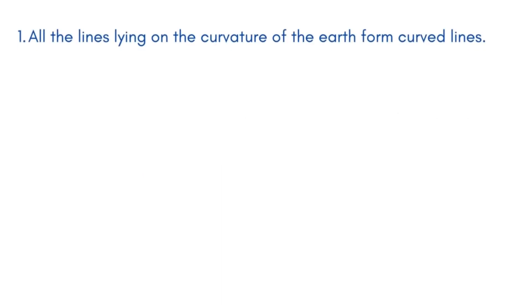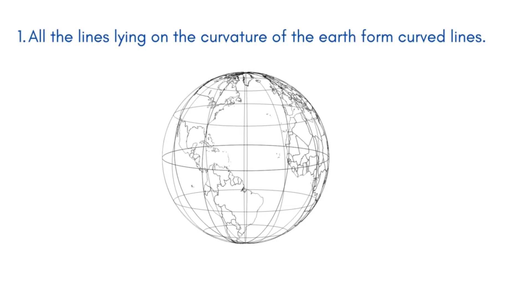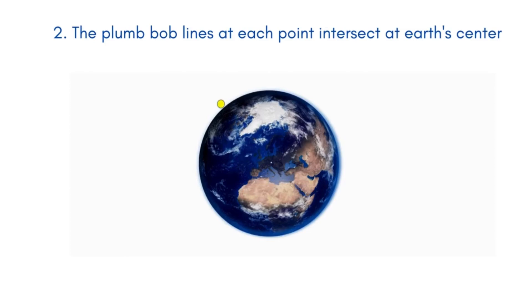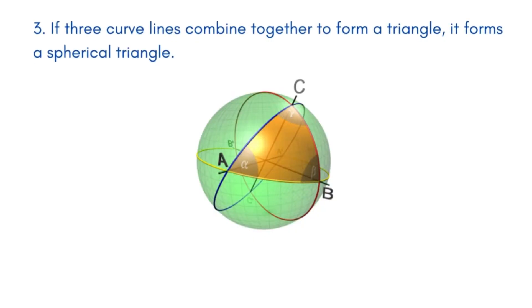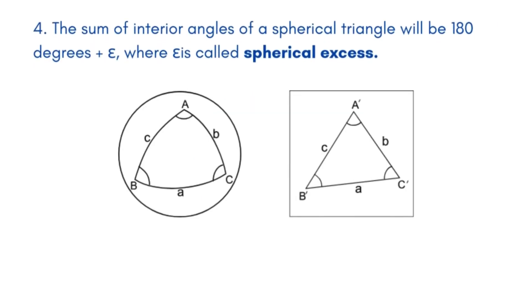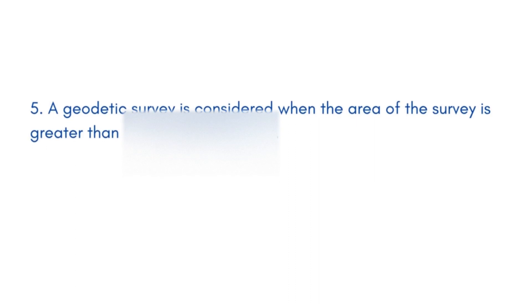Features of Geodetic Survey: 1. All lines lying on the curvature of the Earth form curved lines. 2. The plumb bob lines at each point intersect at the Earth's center. 3. If three curved lines combine to form a triangle, it forms a spherical triangle. 4. Unlike a plane triangle where the sum of internal angles equals 180 degrees, the sum of interior angles of a spherical triangle is 180 degrees plus epsilon, where epsilon is called spherical excess. Hence, triangles formed in geodetic surveying are spherical triangles with arc sides. 5. A geodetic survey is considered when the area of the survey is greater than 250 square miles or 195.5 square kilometers.